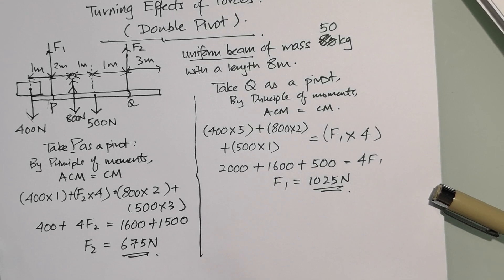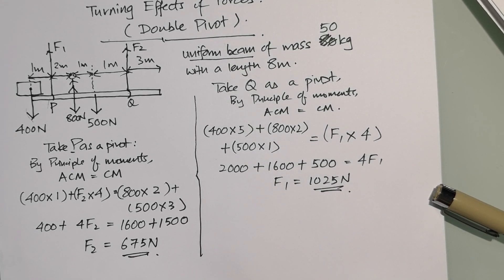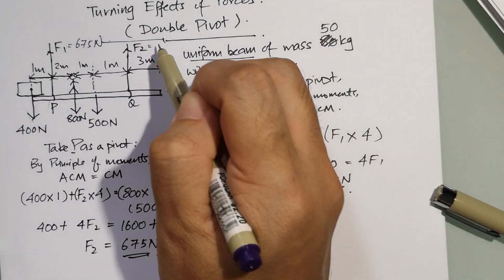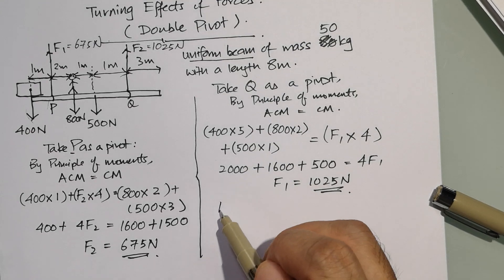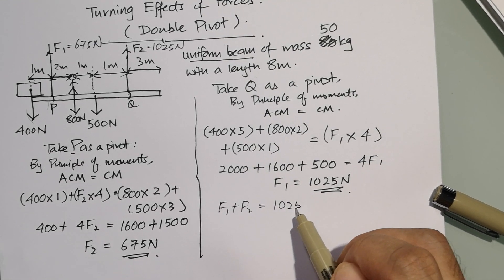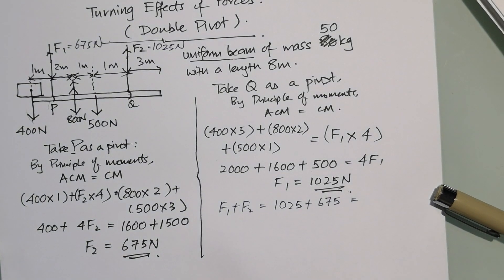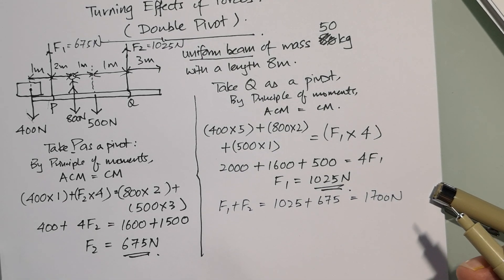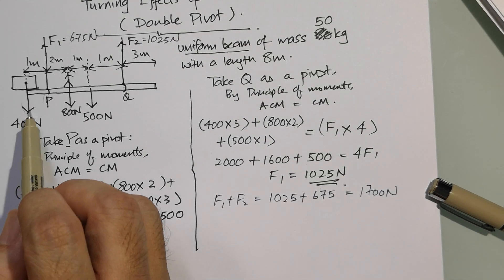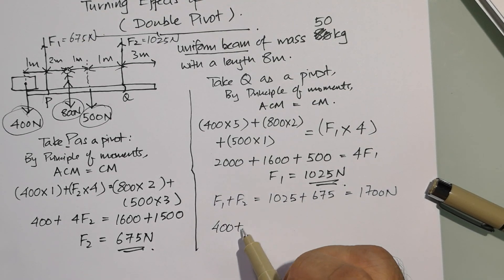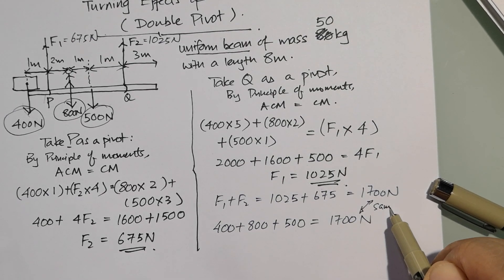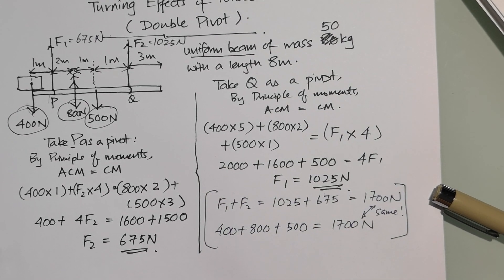You can also double-check your work to see if it's correct. So I'll just write here F1 is 675, F2 is 1025 newtons. What happens when you add these two forces together? You get 1700 newtons. Now this is actually the upward force of F1 and F2. Let's see what happens when you add these three forces together—the downward forces—it's actually the same.